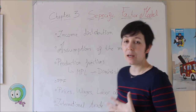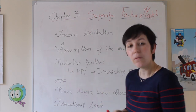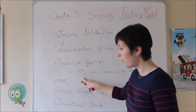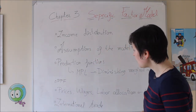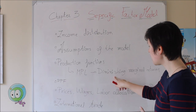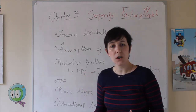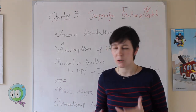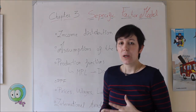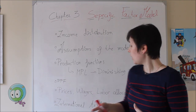Before that, we need to set up the main framework and assumptions of the model. One important concept is the production function. Given the production function now, the marginal product of labor is not going to be constant. In fact, the marginal product of labor is going to be determined by the concept of diminishing marginal returns. With that new marginal product of labor, we are going to draw the PPF curve, which is going to be a little bit different from the Ricardian one.